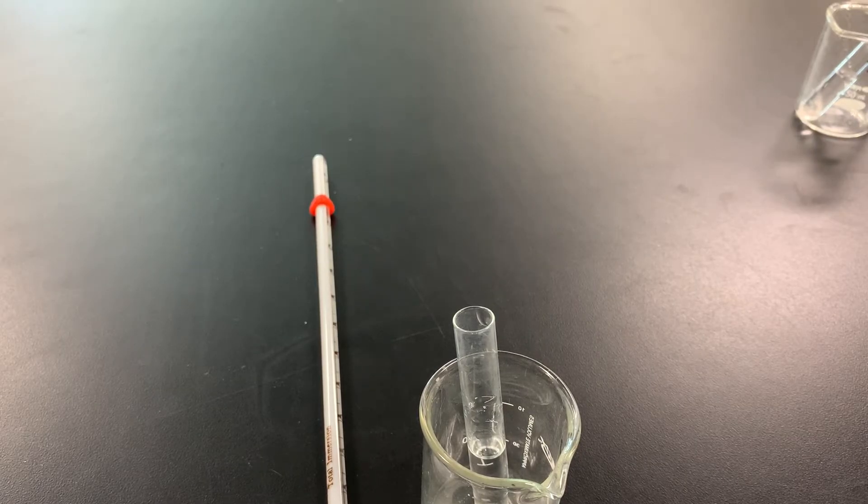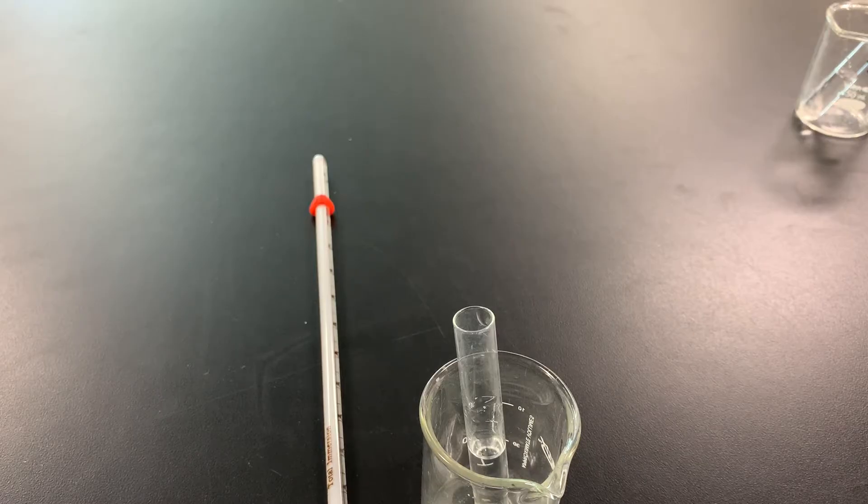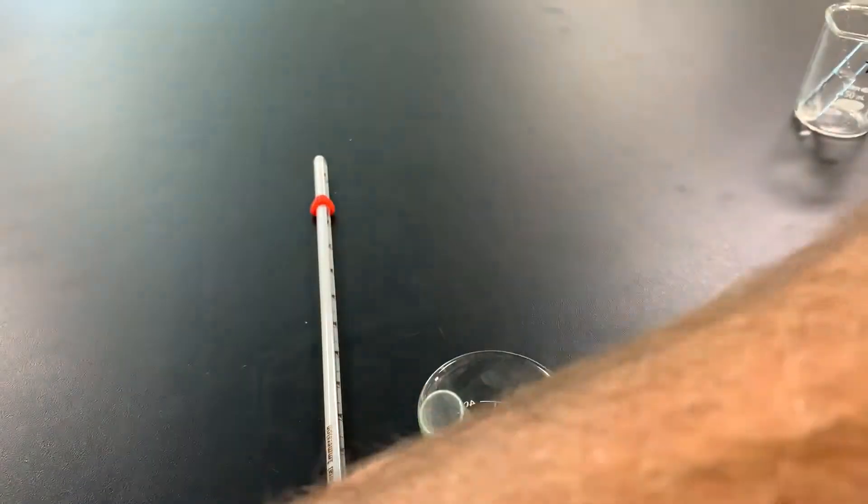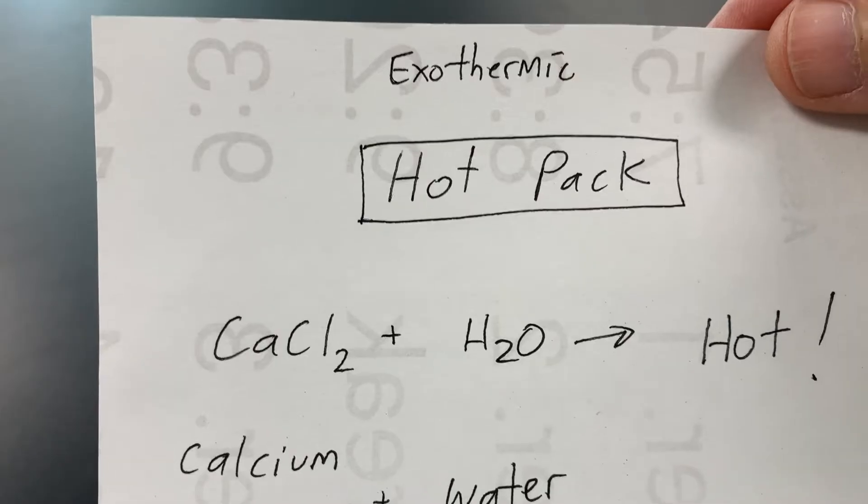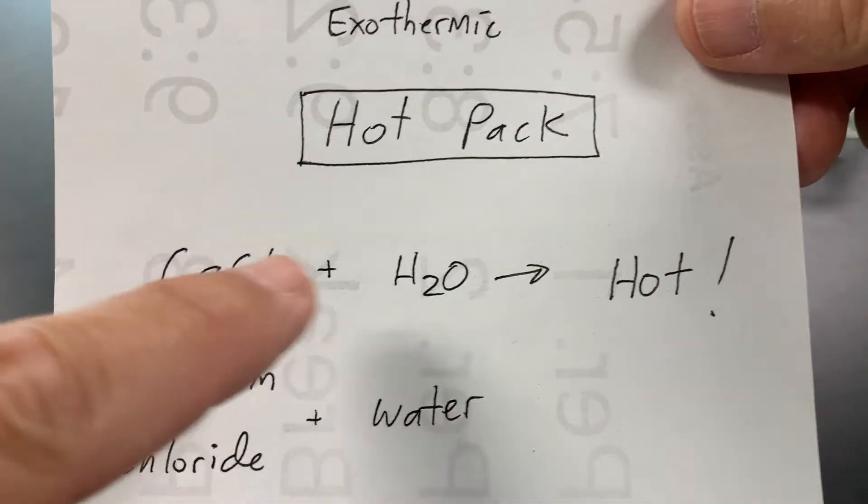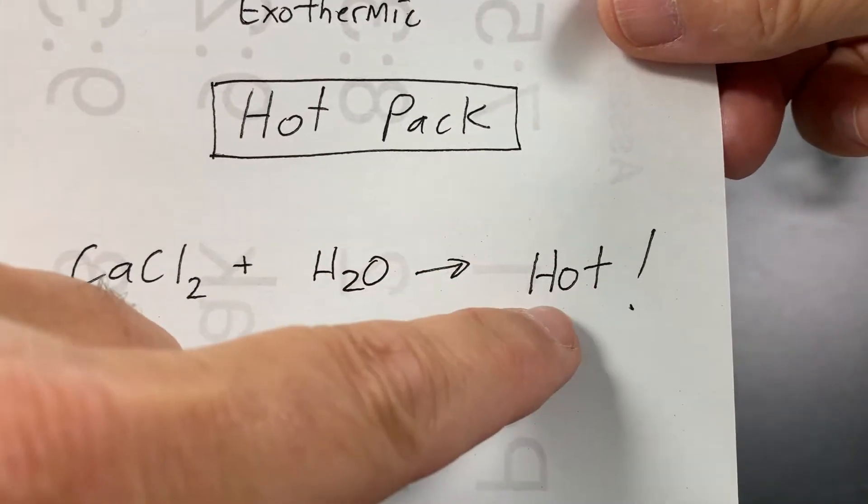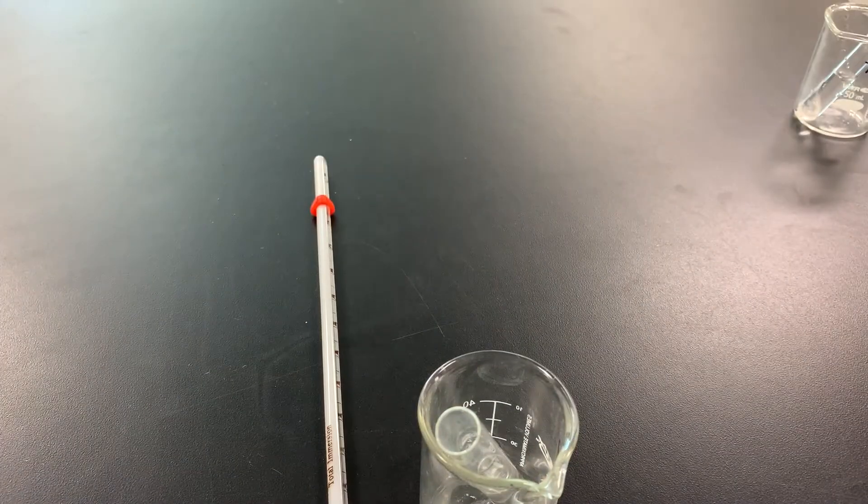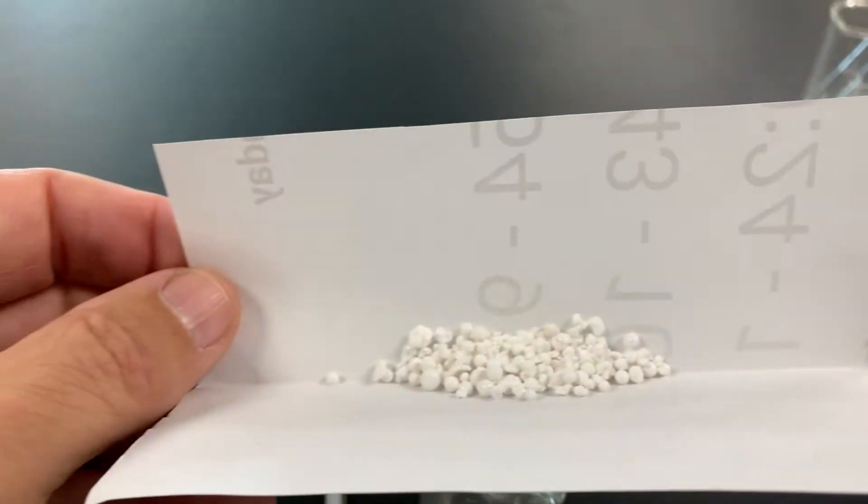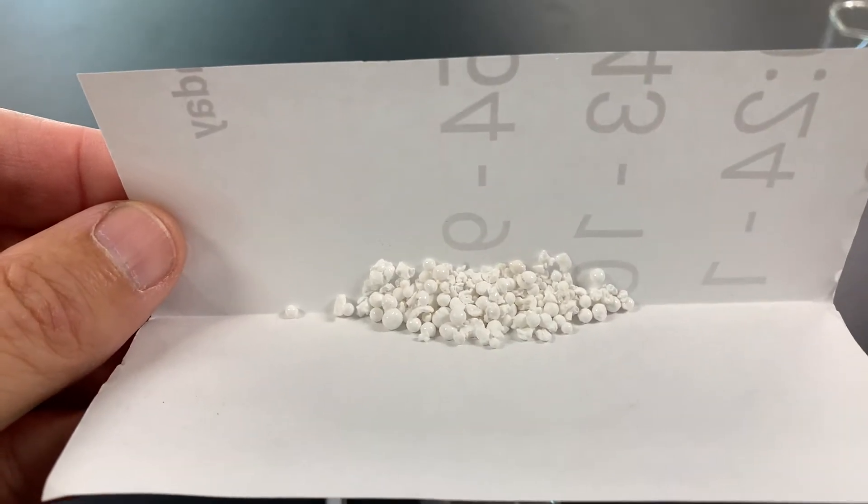Now, I'm going to take a chemical called calcium chloride. So, here's the reaction. It's going to be calcium chloride plus water, and it's going to get hot. So, here's my calcium chloride. You can see it looks kind of like Dippin' Dots, but they're kind of white.